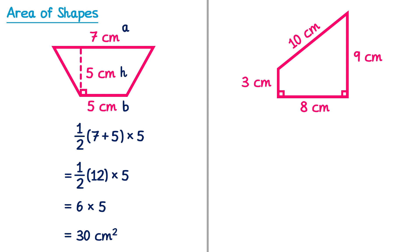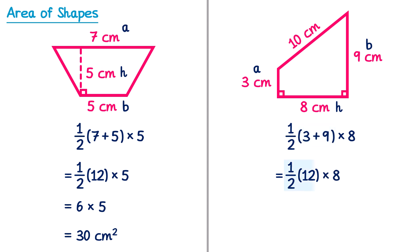This next trapezium has been turned on its side. The parallel lines are actually on the left and the right of the shape, so A is 3 and B is 9. This would also mean the height is the 8 at the bottom. Now we use the formula: one half, then a bracket. Inside the bracket we add A and B — so 3 and 9 — and then multiply by the height, which is 8. Notice we didn't need the 10cm in this question at all. To work this out: one half, we add 3 and 9 which is 12, and then multiply by 8. Half of 12 is 6, and 6 multiplied by 8 is 48cm squared.